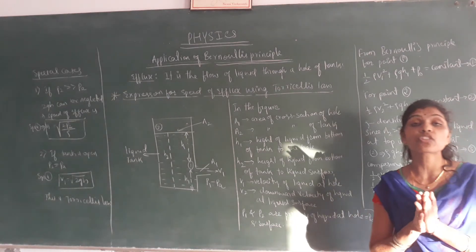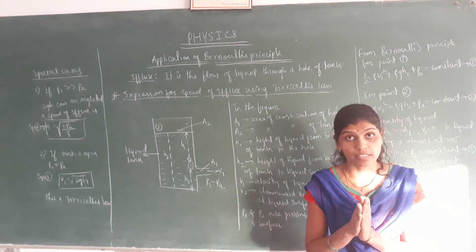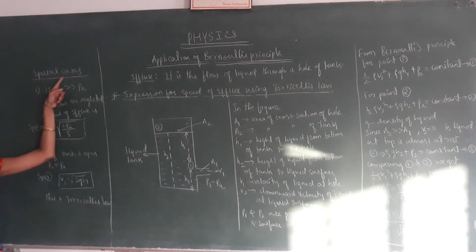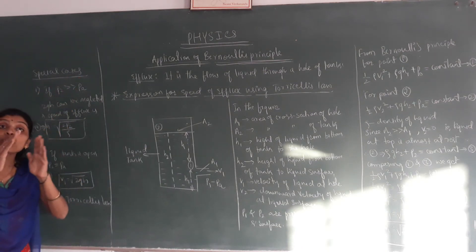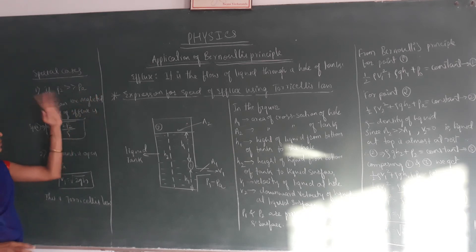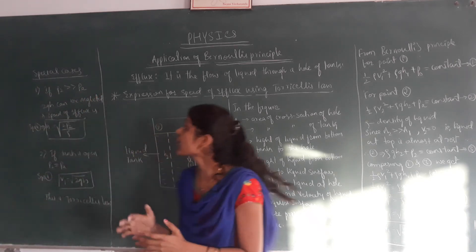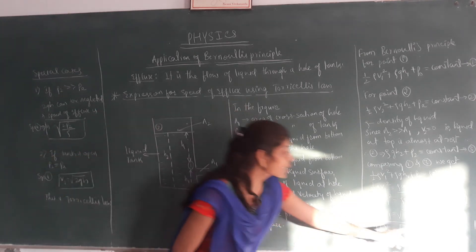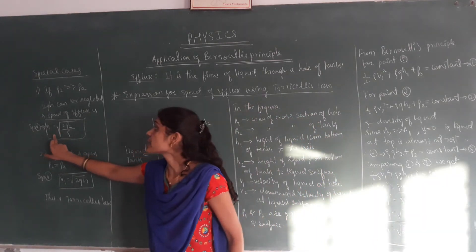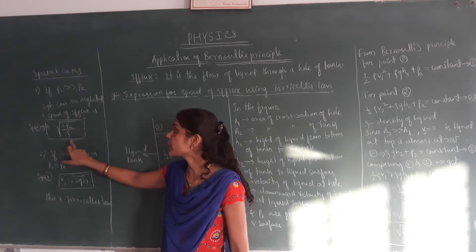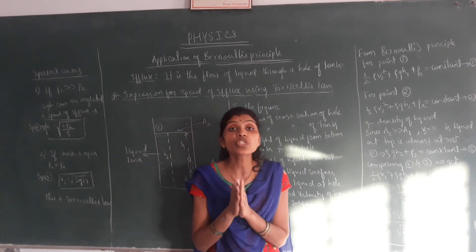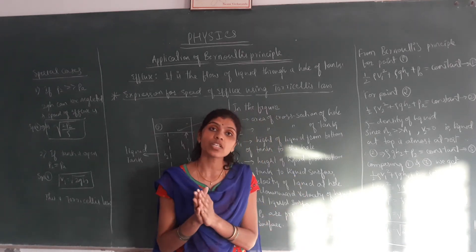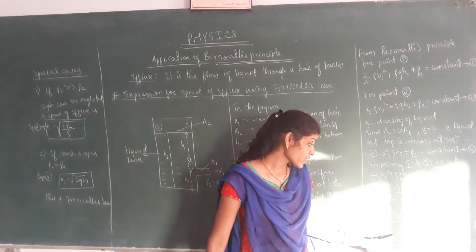This is the final expression for speed of efflux. Let us see some special cases using the same equation. Special case 1: if P2 is far greater than atmospheric pressure P0, then the term 2gH can be neglected. In that case, equation 4 becomes: V1 equals root of 2P2 divided by rho. This is the first special case.